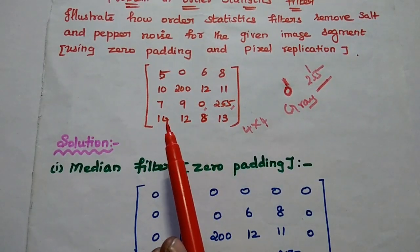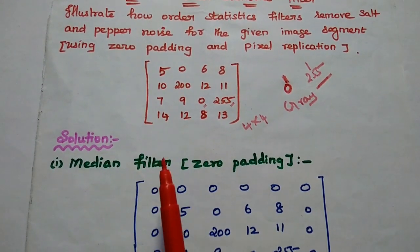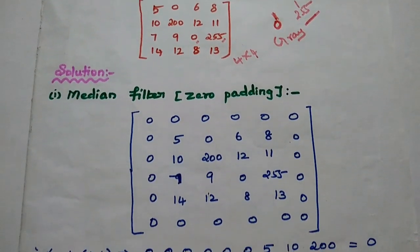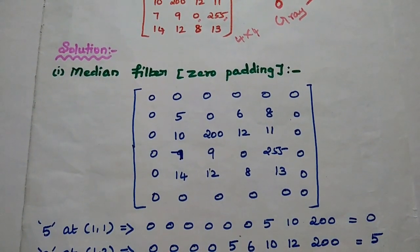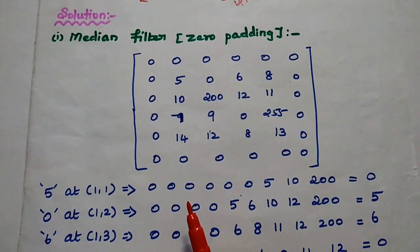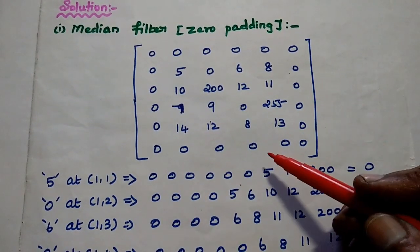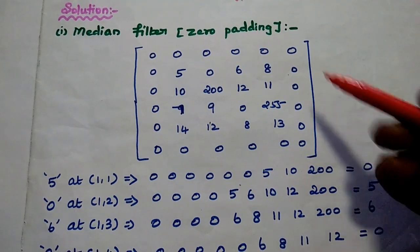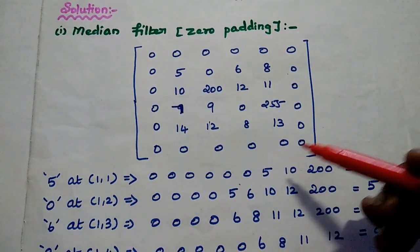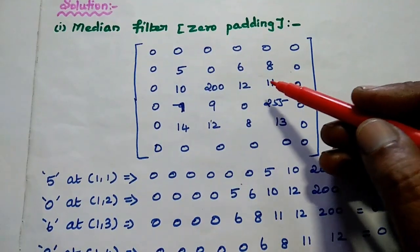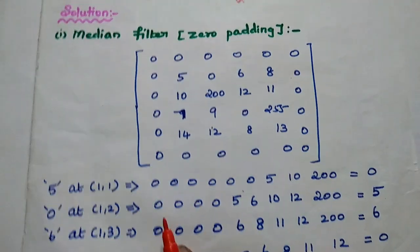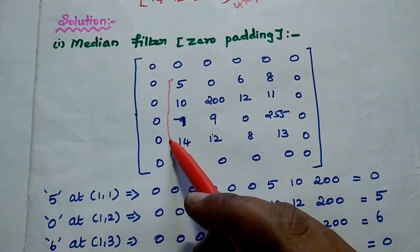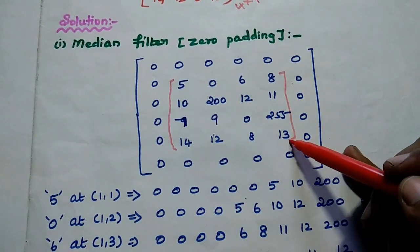They have given us to use both zero padding and pixel replication. So first we are going to solve the problem using median filter for the zero padding concept. Zero padding means we are going to add two rows and two columns with zero values around the given segment. We are going to find out the median filter range only for this image segment.